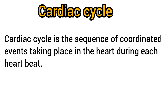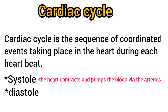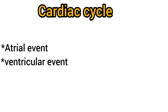The cardiac cycle is defined as the sequence of coordinated events taking place in the heart during each heartbeat. Each heartbeat consists of two major periods called the systole and the diastole. During systole, the heart contracts and pumps the blood through the arteries. During diastole, the heart relaxes and the blood is filled in the heart. The events of the cardiac cycle are classified into the atrial events and ventricular events.